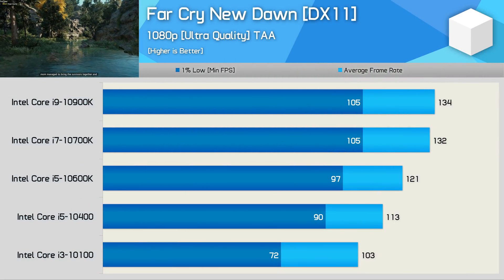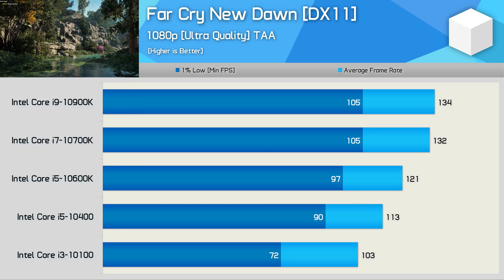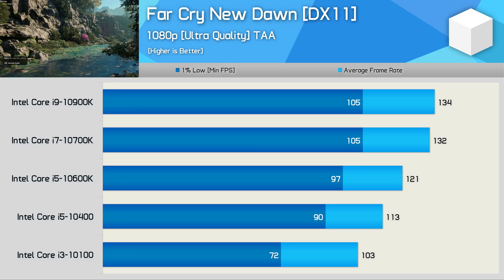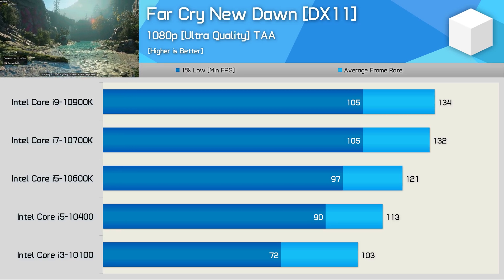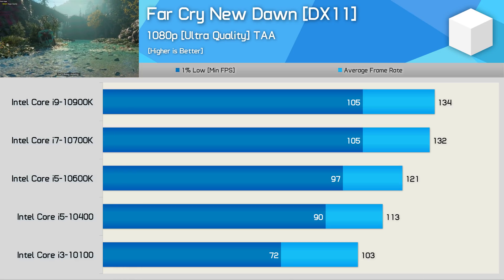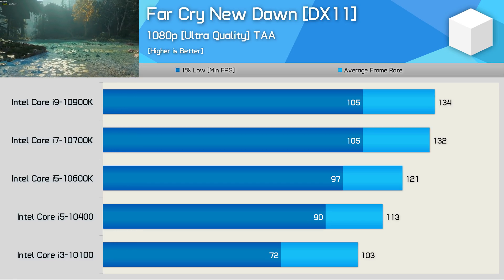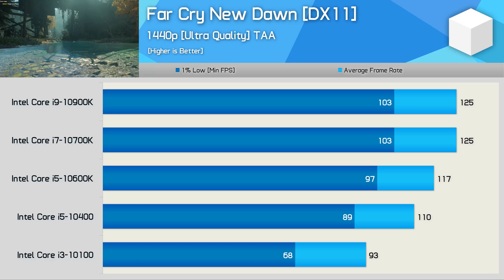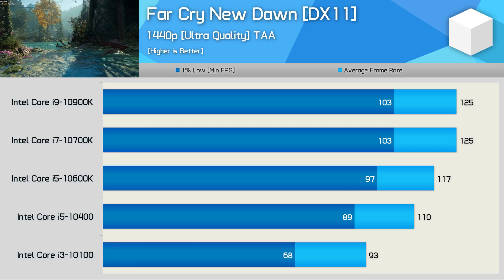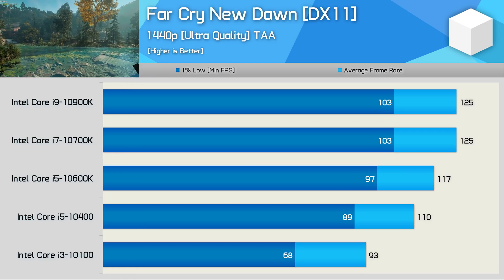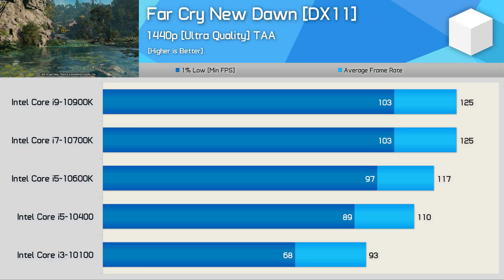Far Cry New Dawn is very sensitive to clock frequency and cache performance. Moving from the 10100 to the 10400, the i5 processor is up to 25% faster. The jump from the 10400 to the 10600K is much smaller at around 8%, in line with the clock frequency difference. A further 9% boost comes with the 10700K, which basically matches the 10900K. Interestingly, increasing to 1440p can actually increase CPU load, so the Core i3 10100 falls even further behind — the 10400 went from 25% faster at 1080p to 31% faster at 1440p.